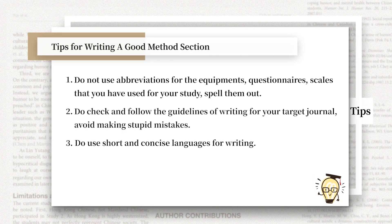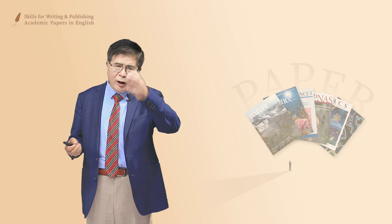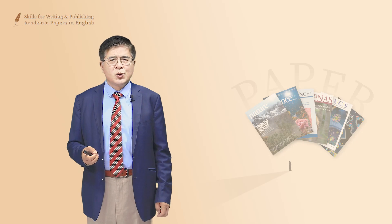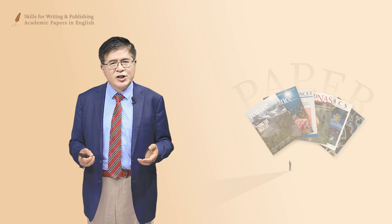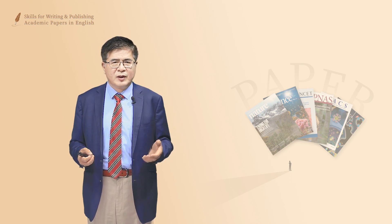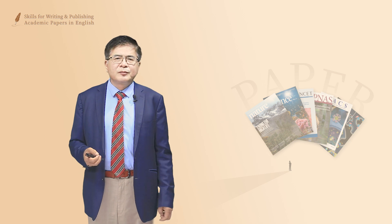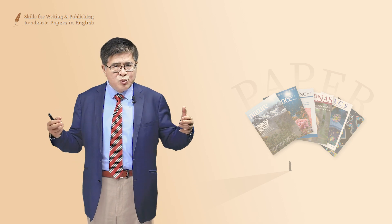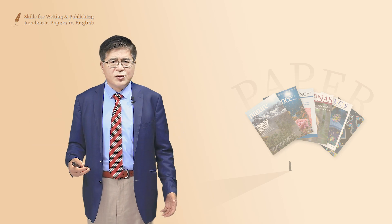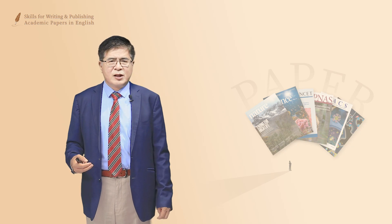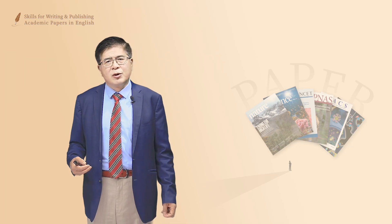Third, do use short and concise language for writing, particularly in the method section. Do not write long sentences. If you read almost any academic article, you will find that the method section paragraphs are usually short — typically four or five sentences each, with each sentence being direct and straightforward.